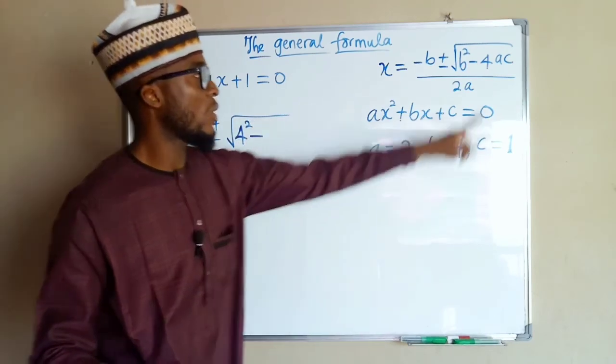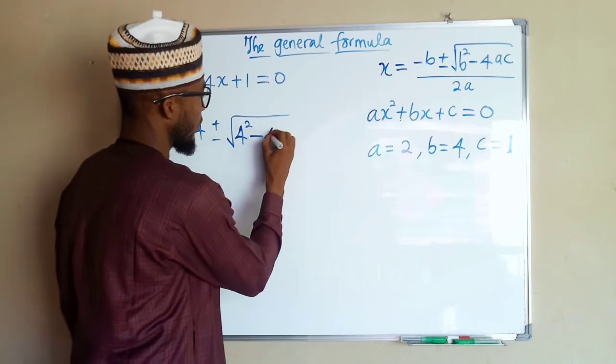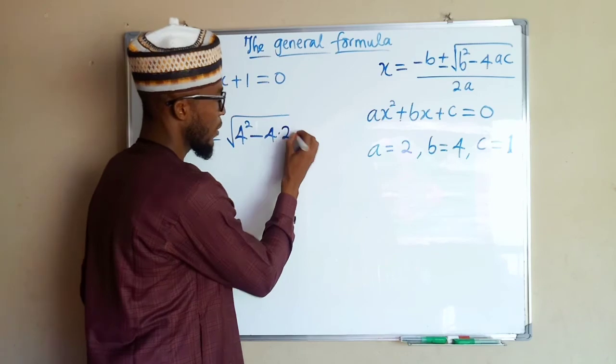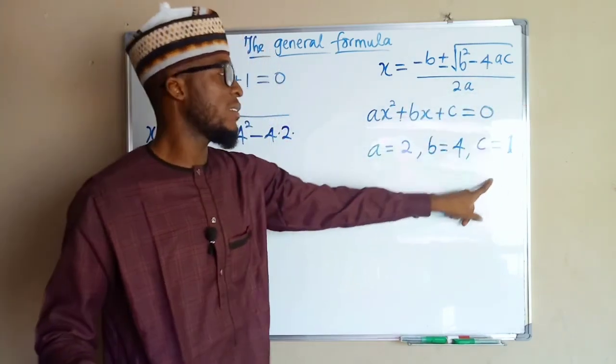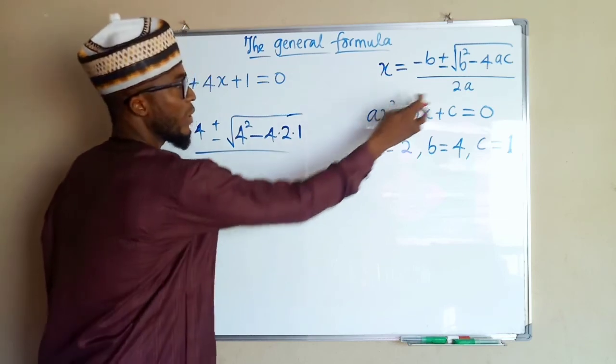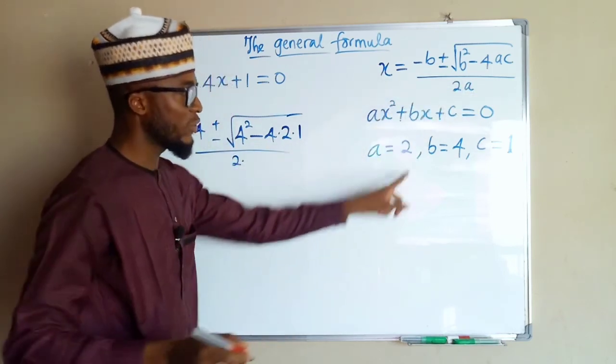Minus 4 as a constant, multiplying a, and a is 2, multiplying c, and c is 1, all divided by 2 times a, 2 times 2.